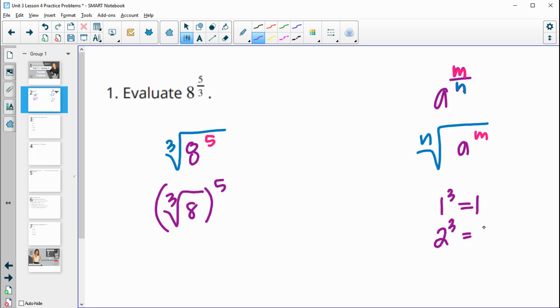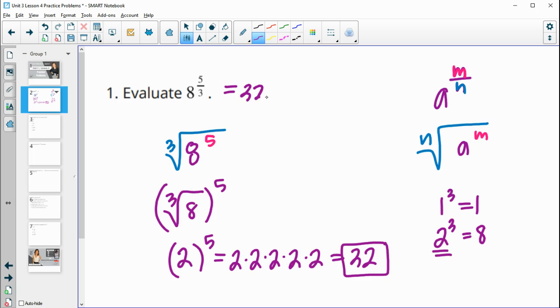two times two is four times two is eight. So two is the cube root of eight. And then I can figure out two to the fifth power by just multiplying two together five times. So two times two is four times two is eight times two is 16 times two is 32. So eight to the five thirds power is equal to 32.